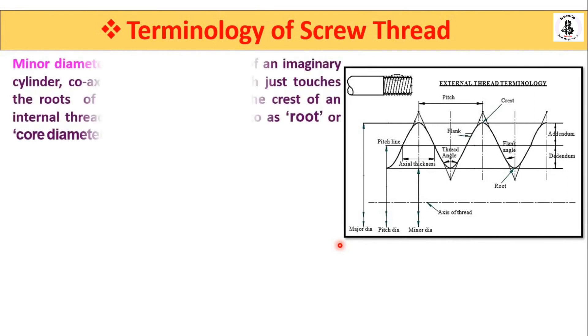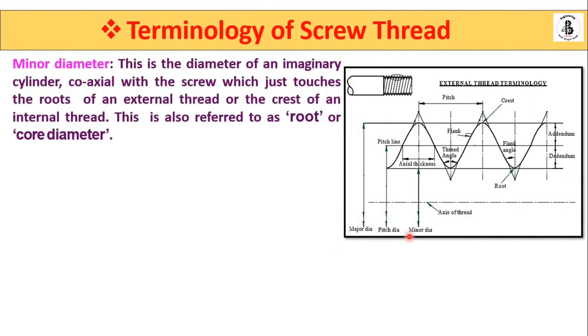Minor diameter is the diameter of an imaginary cylinder coaxial with the screw that just touches the root of external threads, or the crest of internal threads. For external threads, the minor diameter is the root-to-root distance. It is also referred to as the root diameter or core diameter, and is an important terminology in thread manufacturing.